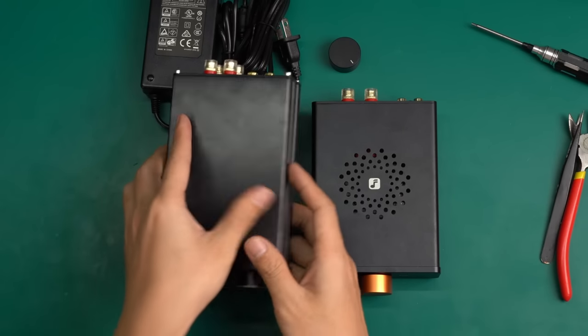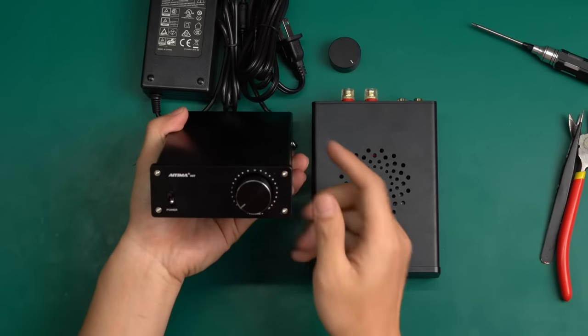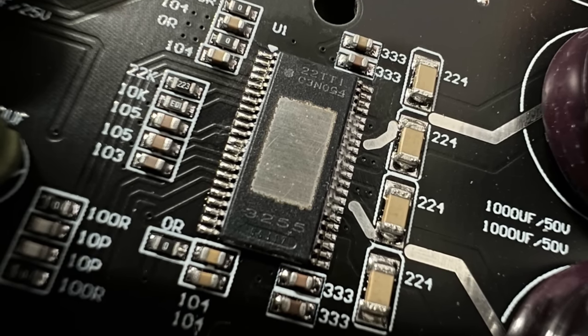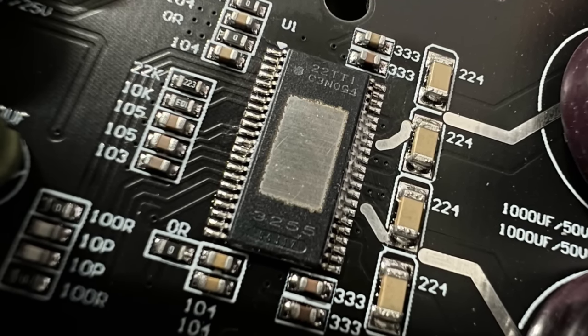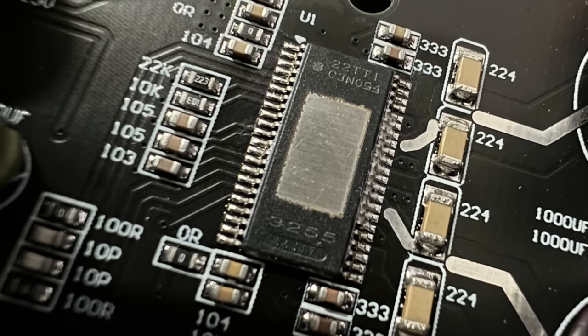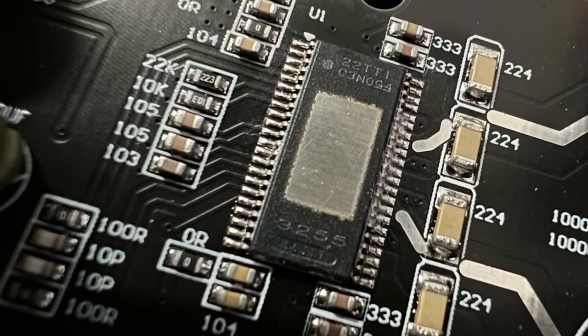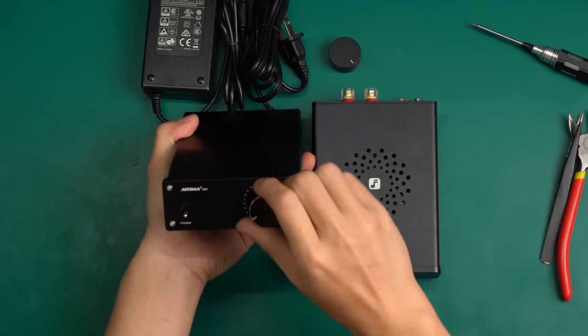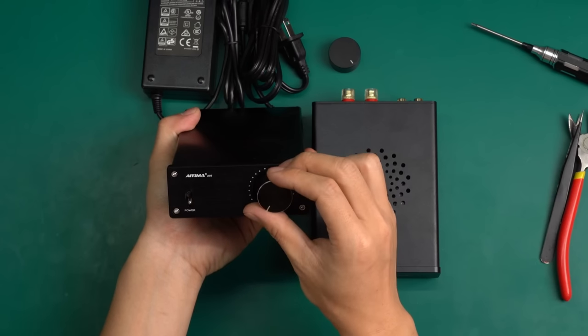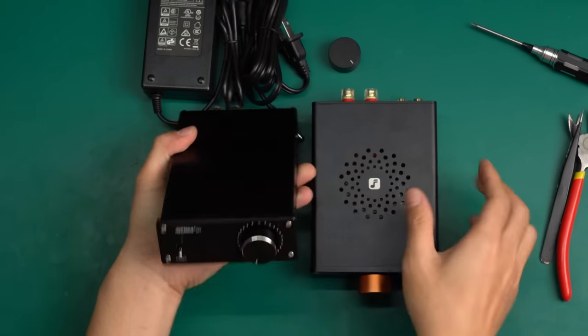The V3 and the IEMA A07 that I have on hand both utilize the TPA3255 chip, and their functions are almost identical. In comparison, as a model that has been sold for several years, the craftsmanship of the A07 is a bit outdated. Like this knob, it seems very cheap compared to the V3's aluminum alloy one. Now let's compare these two units horizontally.